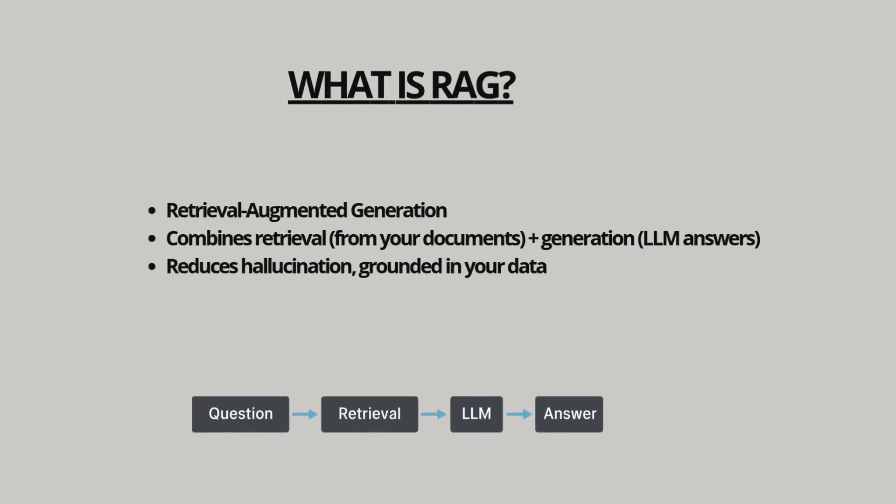So what exactly is RAG? RAG stands for Retrieval Augmented Generation. In simple words, you provide the system with your own data, like documents or research papers, and later you can ask questions about that data. Instead of relying only on what the model was trained on, it retrieves relevant facts directly from your documents and generates grounded, reliable answers. This makes RAG especially powerful for research because it reduces hallucination and ensures answers are always tied back to your uploaded sources.